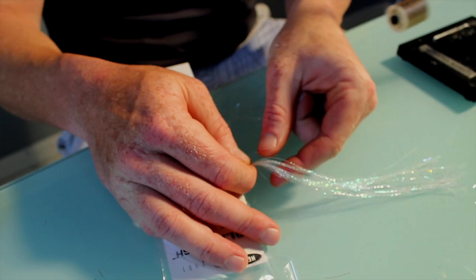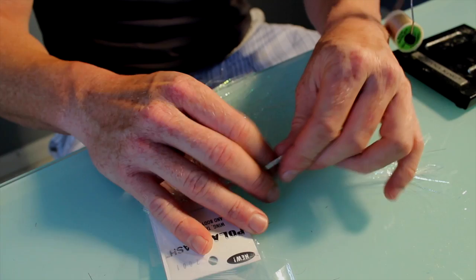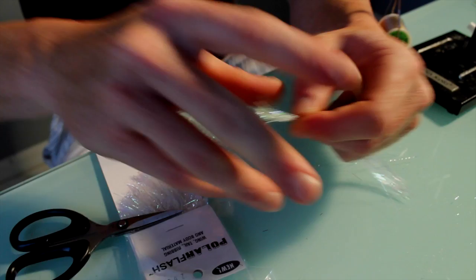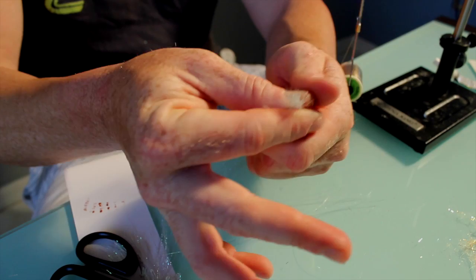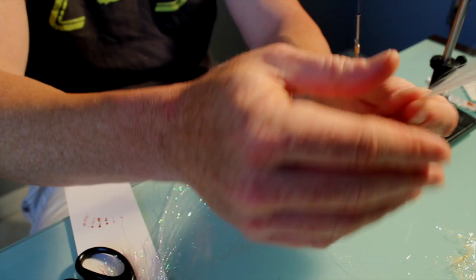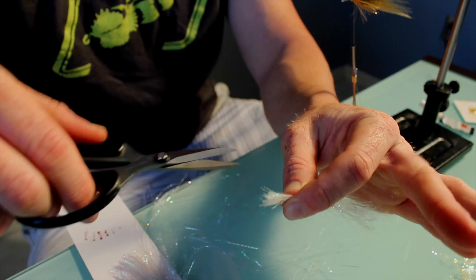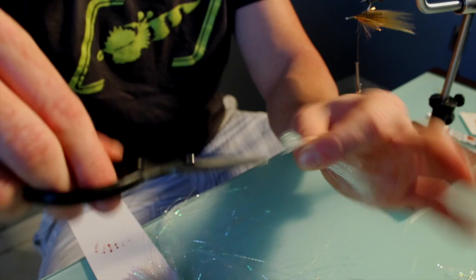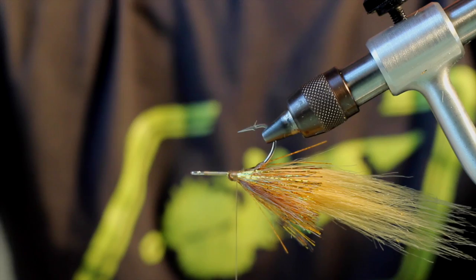Next, we're going to tie on some Pearl Polar Flash. Same amount, about 40, 50 strands. Bend it in half. Scissors are nice and sharp, so it don't matter. And pull out the weird ones. Ones that don't want to lay straight. Just going to hold you back in life. And do the same thing. Just kind of taper this around like that a little bit. A little scissor action to them just like that. Make it a little less paintbrushy.